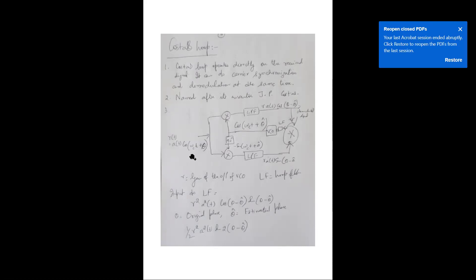The Costas loop — named after inventor J.P. Costas — operates directly on the received signal and can perform carrier synchronization and demodulation simultaneously. The received signal r(t) = A(t) cos(omega_c t + theta) is applied to two multiplier branches. The VCO generates cos(omega_c t + theta_hat) for the in-phase branch and, after a 90-degree phase shift, minus sin(omega_c t + theta_hat) for the quadrature branch.